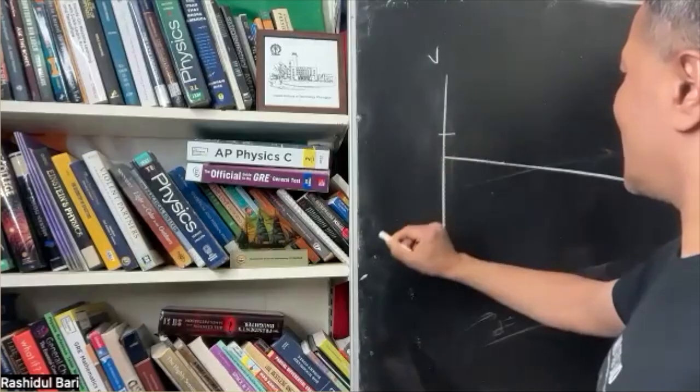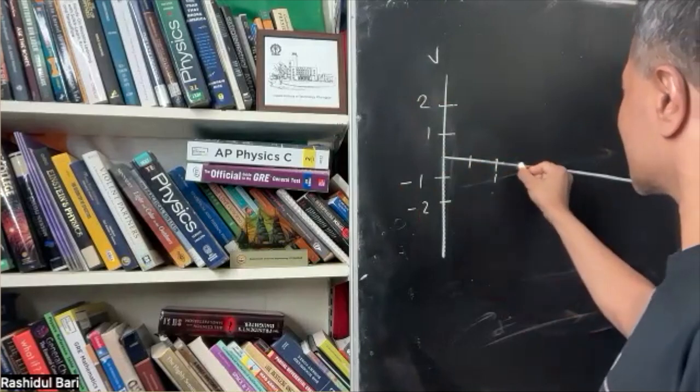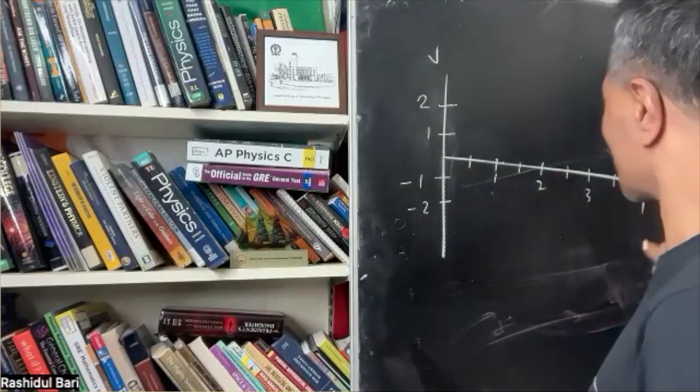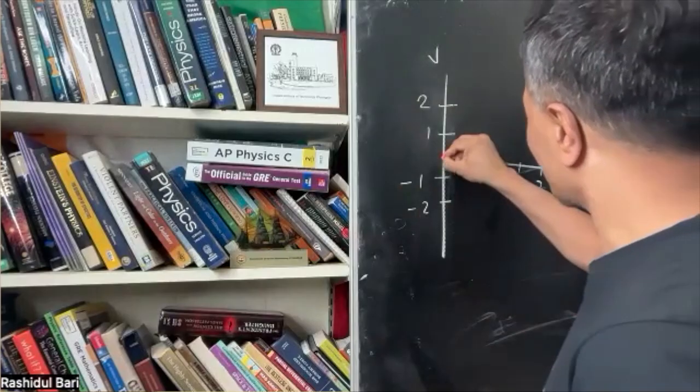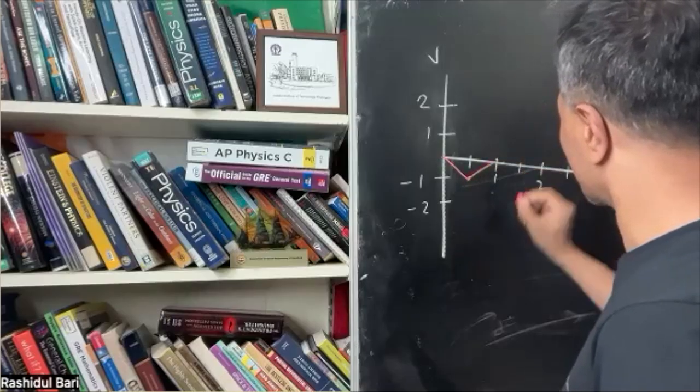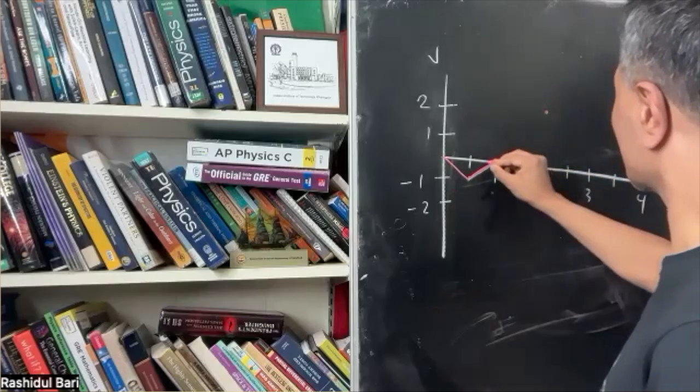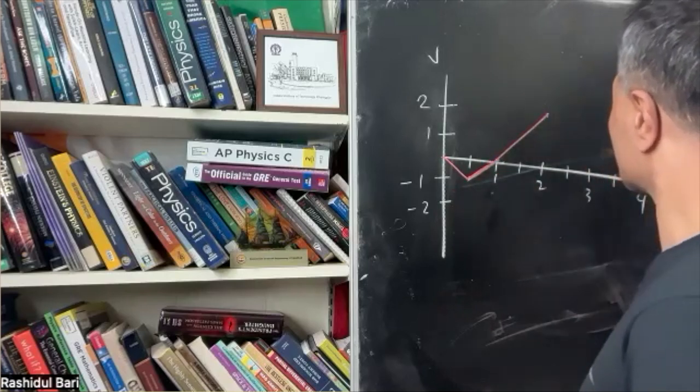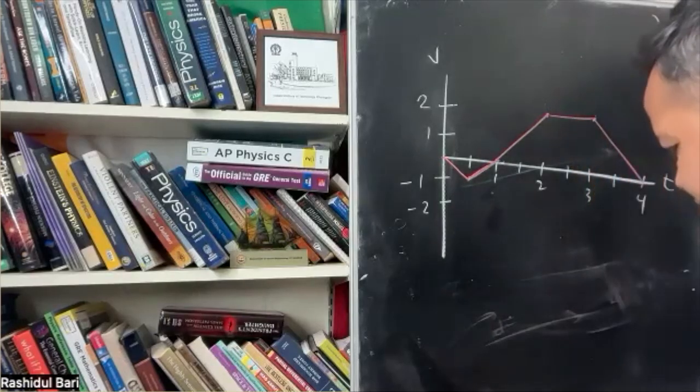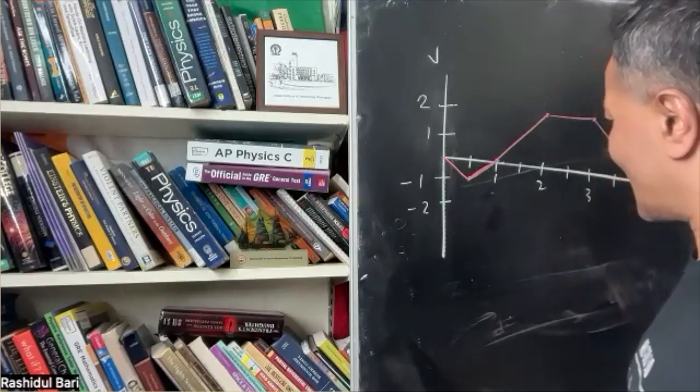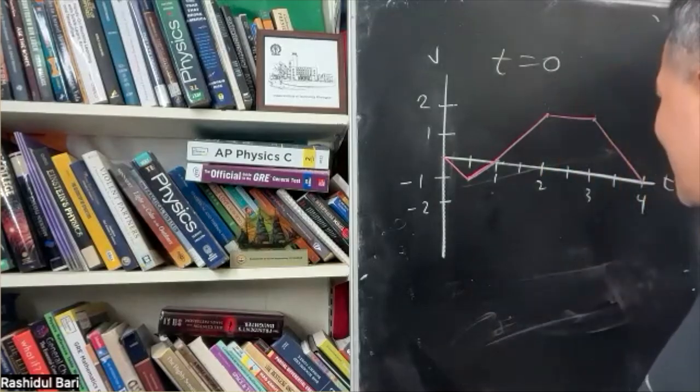Now I'm going to give you question number 3. Let's see who can solve it faster. So this is the velocity-time graph. The vertical axis goes 1, 2, and negative 1, negative 2. The horizontal axis is time: 1, 2, 3, 4 seconds. Now I'm going to draw the graph. I'm putting a dot here and sketching the line. At t=2, the point is at (2, 2). At t equals 0, the object is at origin, right?